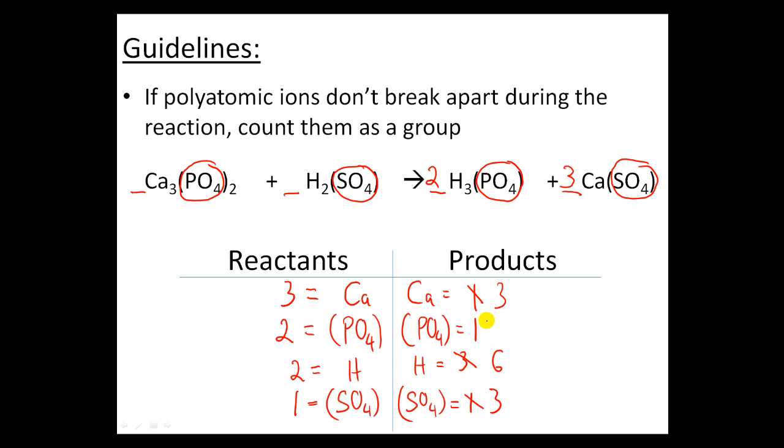So cross that out, put a 6. How many phosphates do I have now? 2. Cross that out, put a 2.